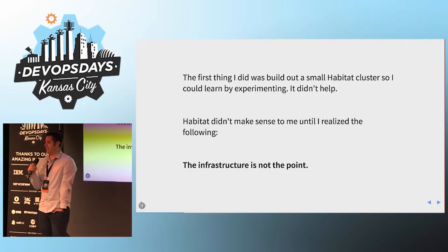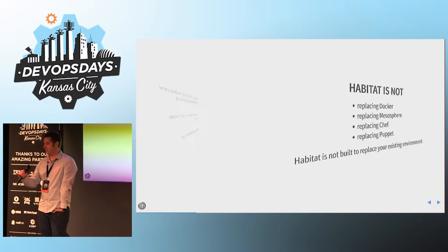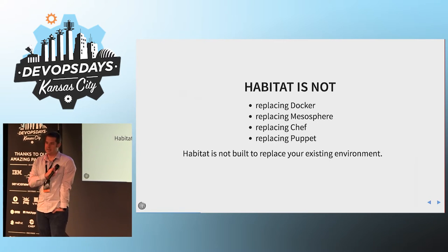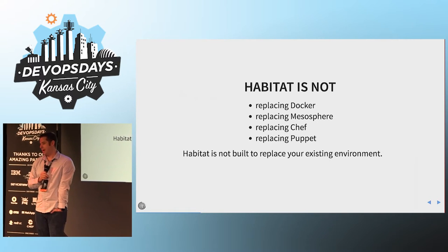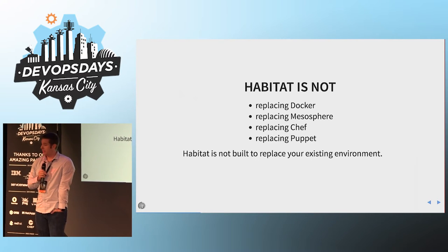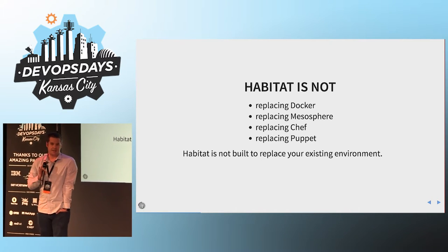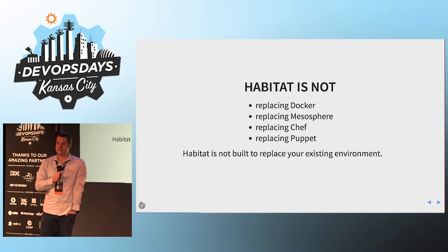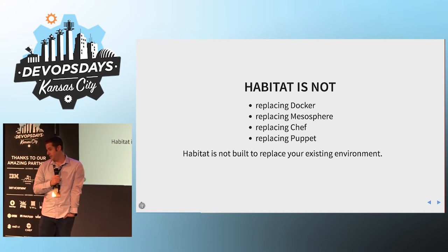But it didn't make any sense until I realized one thing: infrastructure is not the point. So Habitat is not replacing Docker, it's not replacing Mesosphere, it's not replacing Chef, and it's not going to try to replace things in your environment.